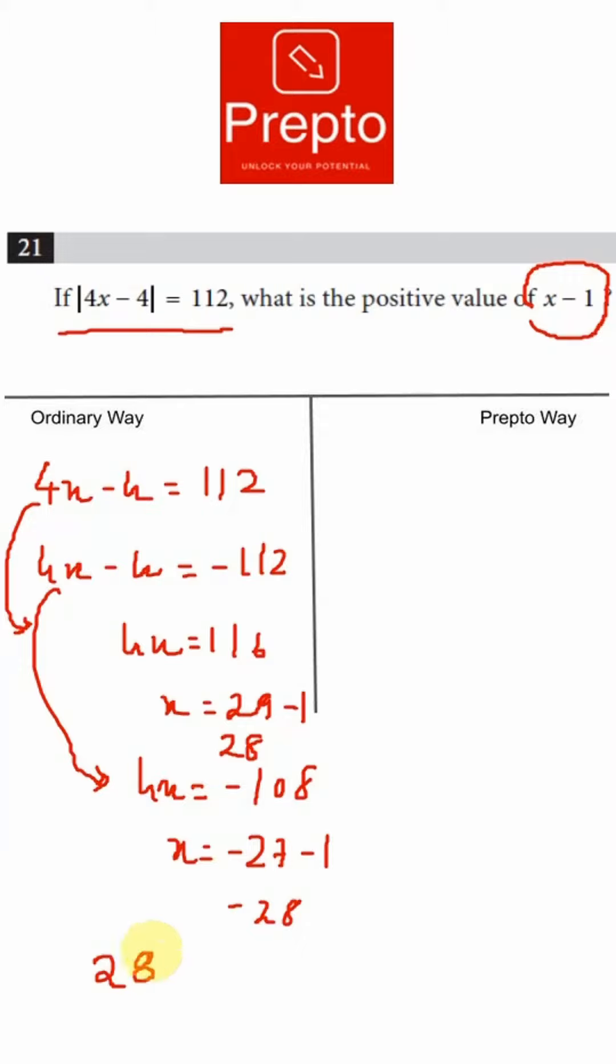In the ordinary way, you'll be working with equations, solving, opening brackets, et cetera. But in the Prepto way, there is a reason why they're asking for x minus 1. Why is it that they're not asking for x?